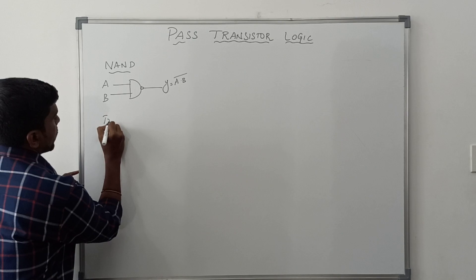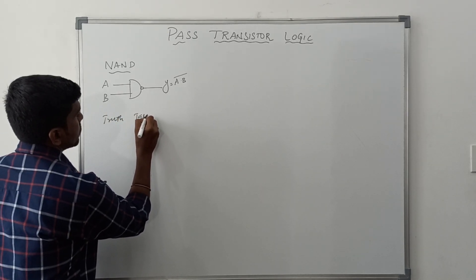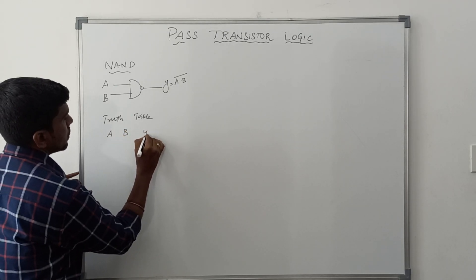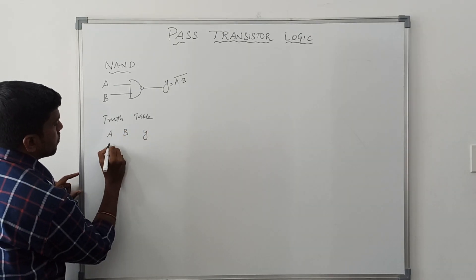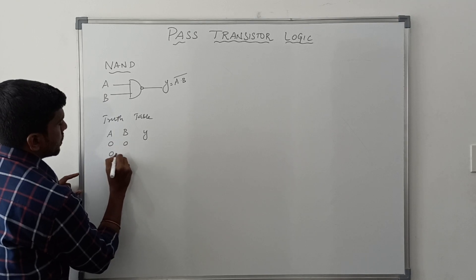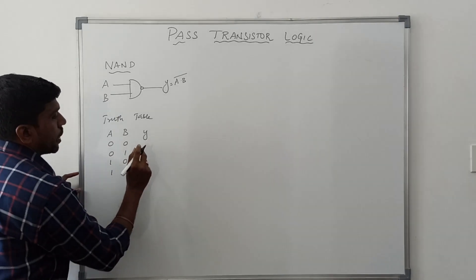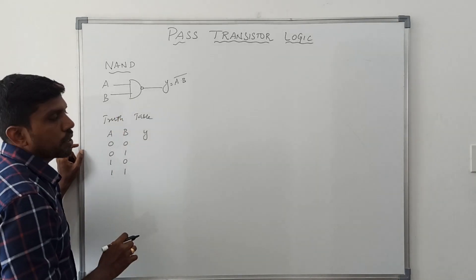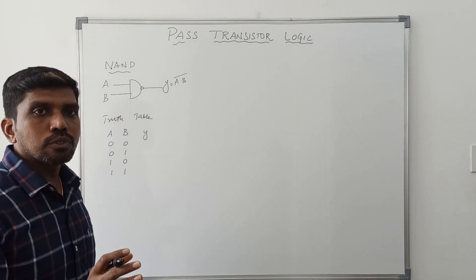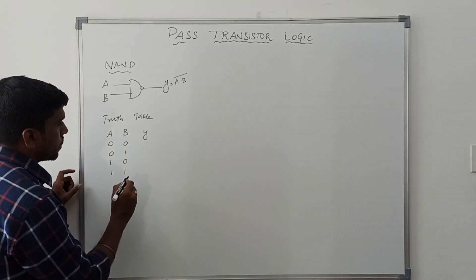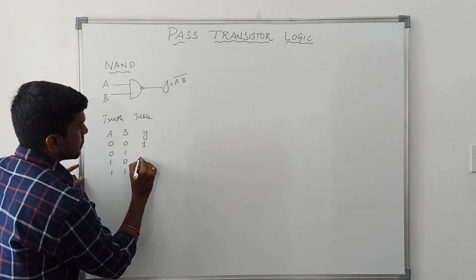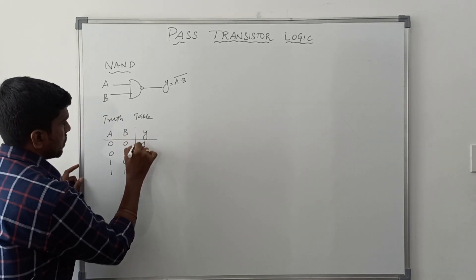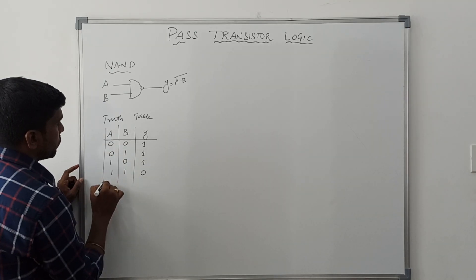Now I am going to write the truth table. In this NAND gate we have two input variables, A and B. It makes four combinations of input, and Y is the output of the NAND gate. The property of NAND gate: when both the inputs are at a high level, the corresponding output is 0. For the rest of the cases, the output value is 1.